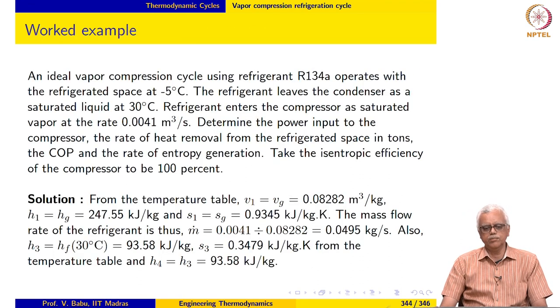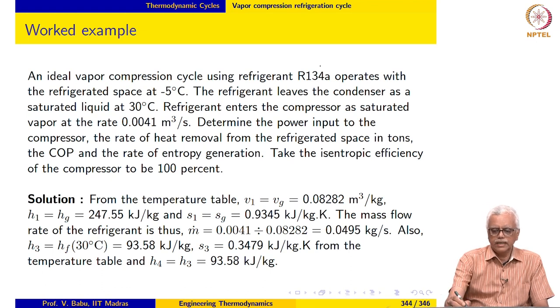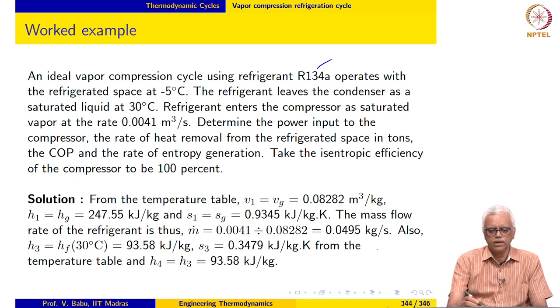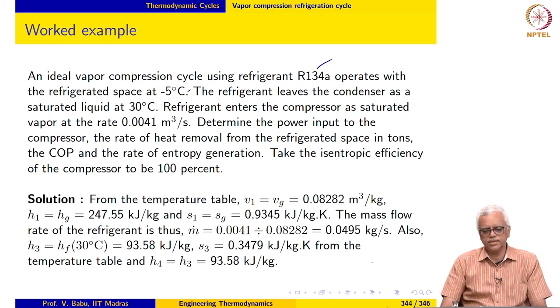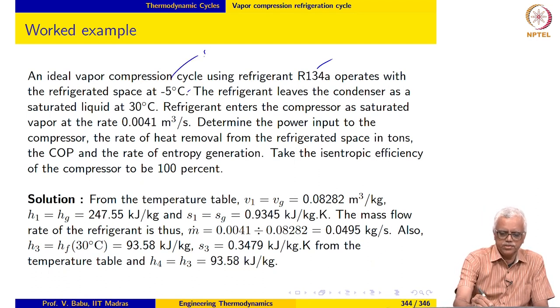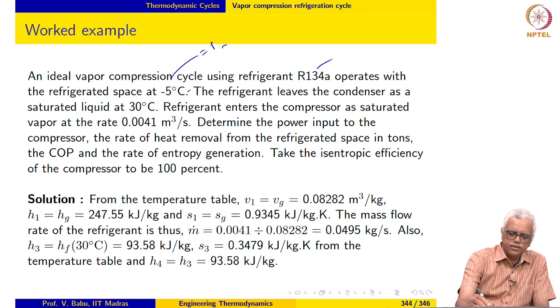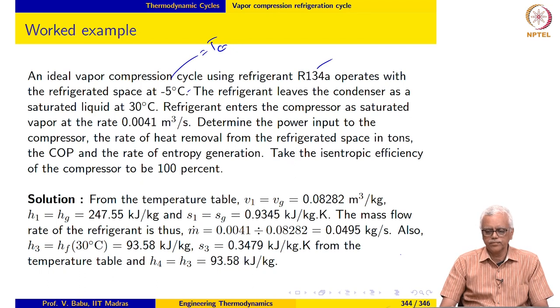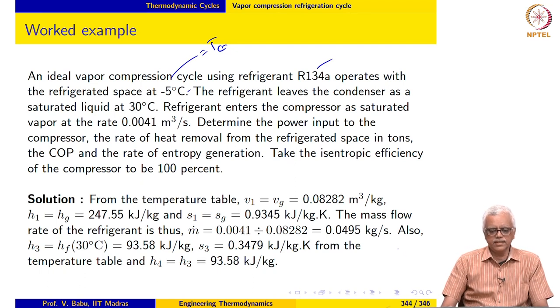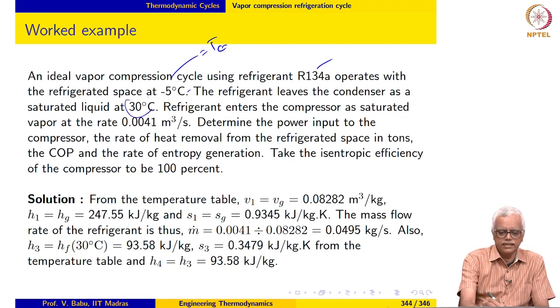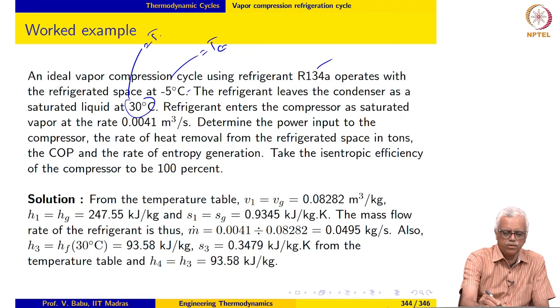So let us look at an example of a vapor compression cycle. An ideal vapor compression cycle using R134A operates with the refrigerated space at minus 5 degrees Celsius. So, that means TC is equal to minus 5 degrees Celsius. The refrigerant leaves the condenser as a saturated liquid at 30 degrees Celsius. That means this is equal to TH.